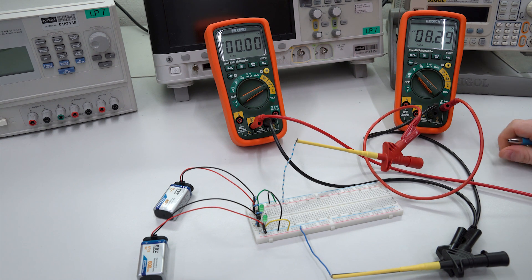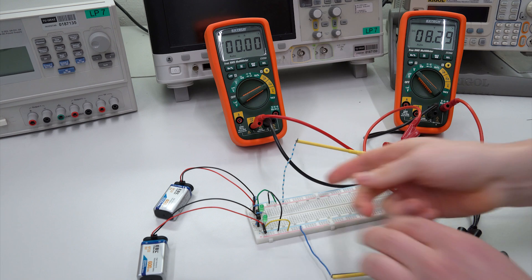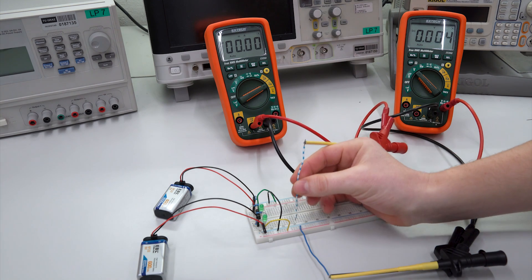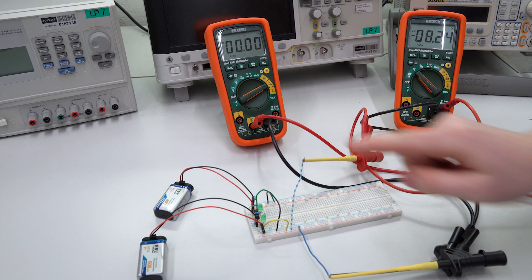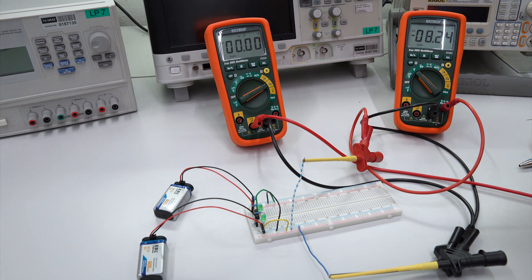Here we can read around 8.3 volts. This value depends on the battery type you use and on the state of charge. But this value is as I expected. So let's measure the negative potential between ground and the negative potential. So here we can read around minus 8.3 volts again.